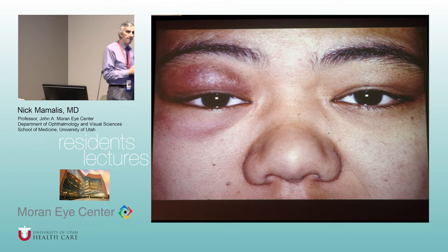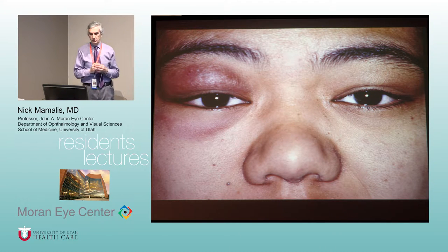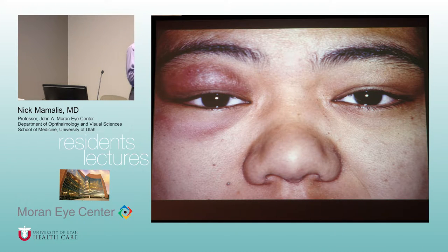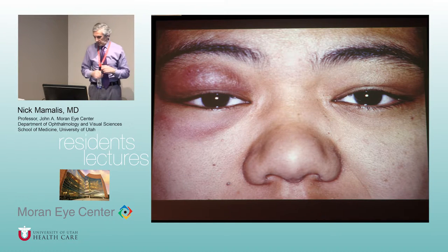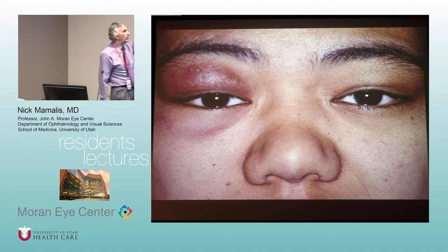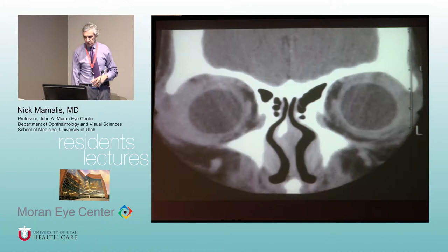Eileen, looking at this patient, what would you be concerned about? Preseptal cellulitis is always in your differential when you see that. Also idiopathic orbital inflammation — what used to be called pseudotumor — can be anterior and look like this. But it's interesting: it's red and swollen but maybe a little less hot-looking than you'd typically see with preseptal cellulitis.